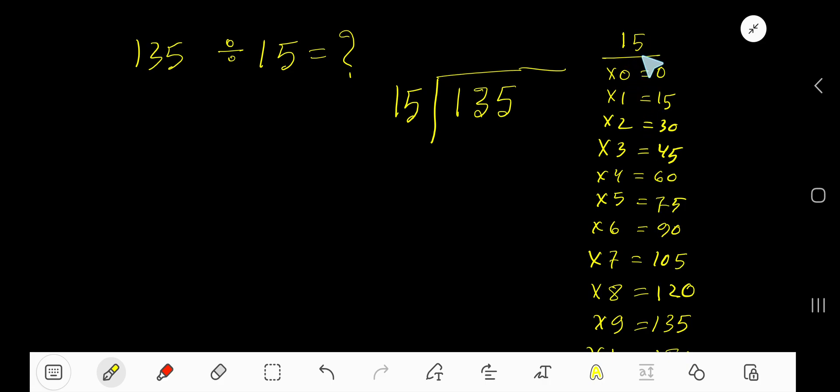To find out the multiplication table of 15, just add 15 with the previous step. 0 plus 15, 15. 15 plus 15, 30. 30 plus 15, 45. 45 plus 15, 60. 60 plus 15, 75. This is the way to find out the multiplication table of 15.